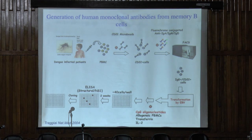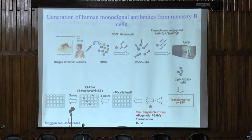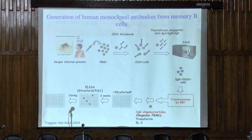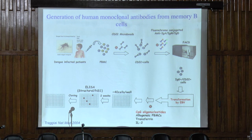I'm going to describe two different ways of looking at antibody responses. The first is to make antibodies from memory B cells — from people who have recovered from dengue virus infection, anywhere from a month to several years after it occurred. This method involves EBV transformation of the B cells and is essentially the same as making a monoclonal antibody from mice.